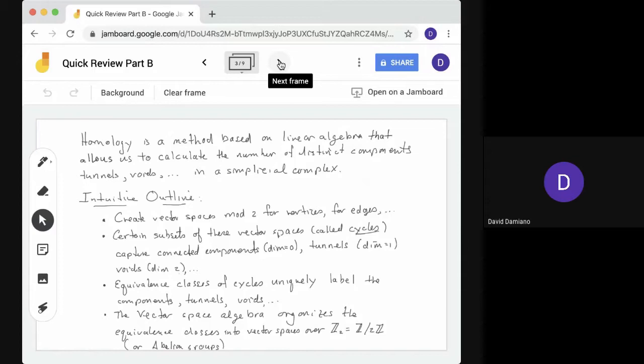So intuitively, we want to create vector spaces mod 2 for the vertices, for the edges, and so on. Certain subsets of these vector spaces called cycles capture connected components (that's dimension 0), tunnels in dimension 1, and voids from dimension 2. Equivalence classes of cycles uniquely label the components, tunnels, and voids. So the vector space algebra organizes the equivalence classes into vector spaces over Z2, so that's Z mod 2Z. We're thinking of it as vector spaces, but we could also think of it as abelian groups.